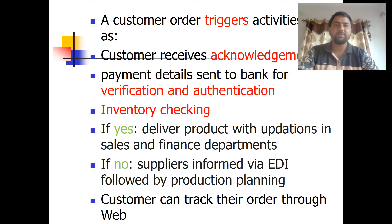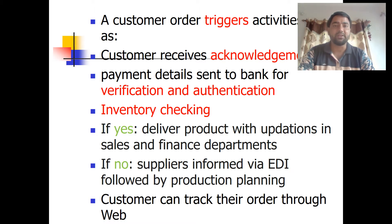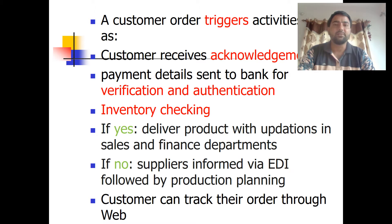In the previous video about the AIP, we were discussing the different activities triggered when a customer places an order. In part two, when a customer places an order on a particular portal, they receive an acknowledgement. When payment is made, the payment details get verified from the financial institution — the customer's bank. After authentication, an inventory checking process is done, and if inventory is available, the product is delivered to the customer from the seller.